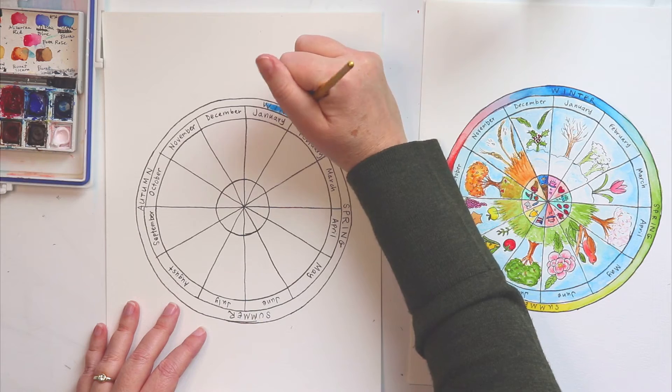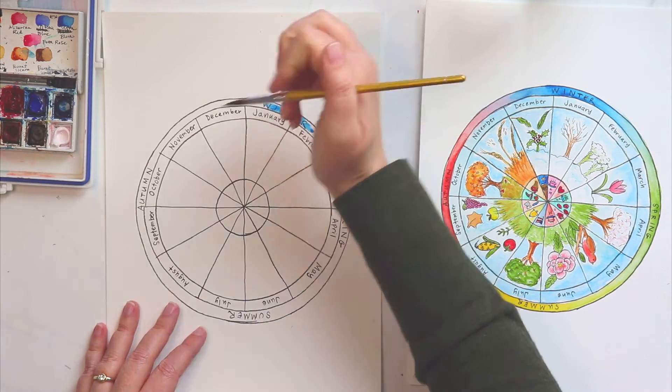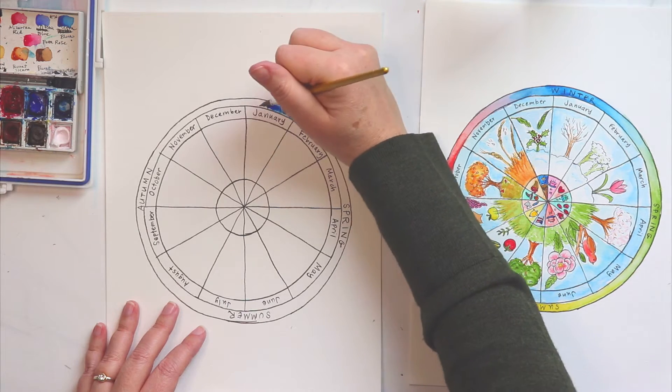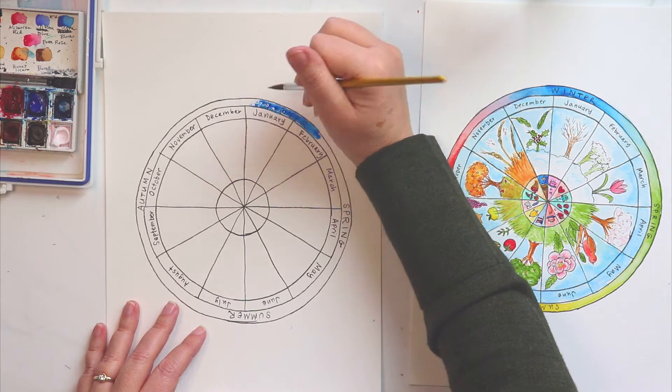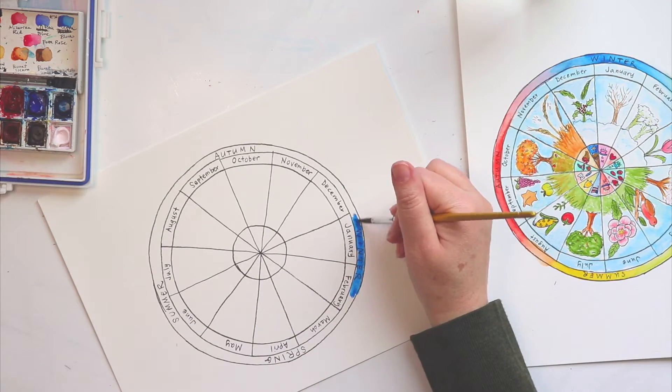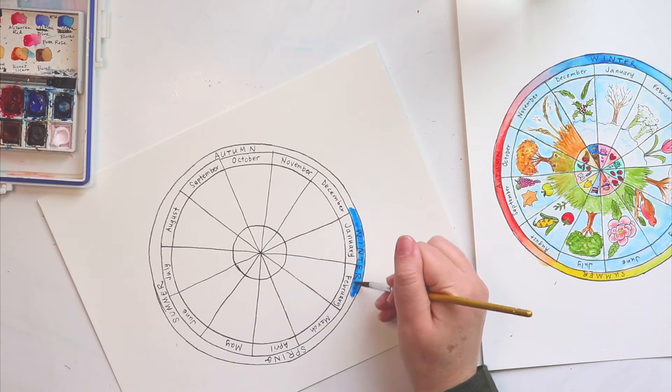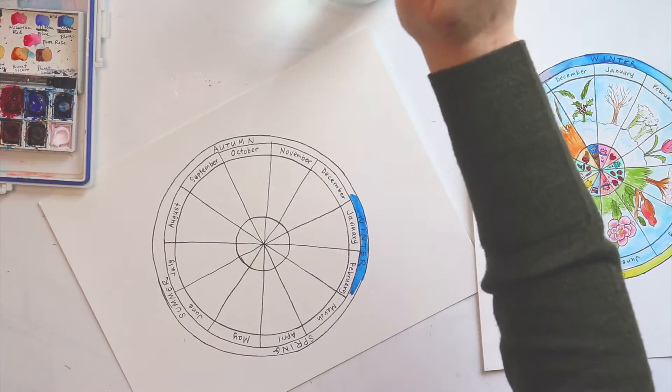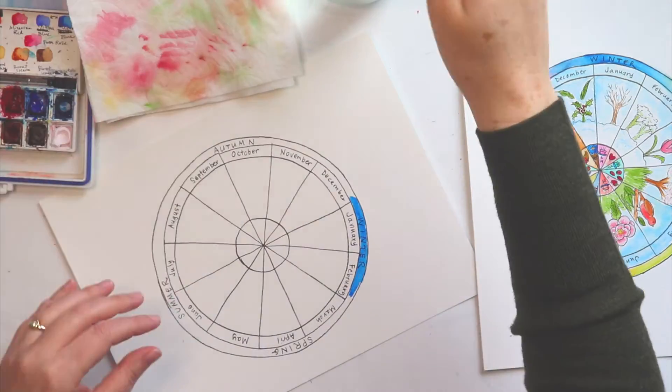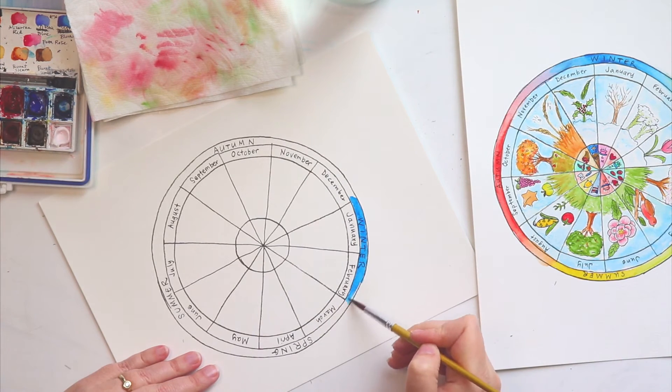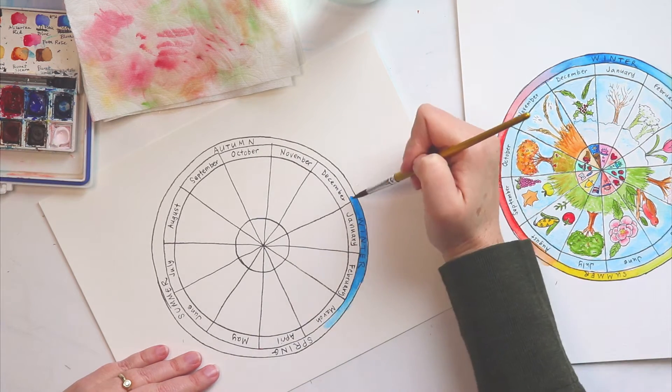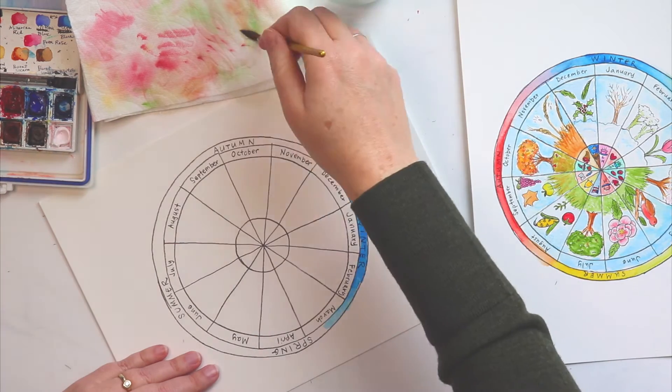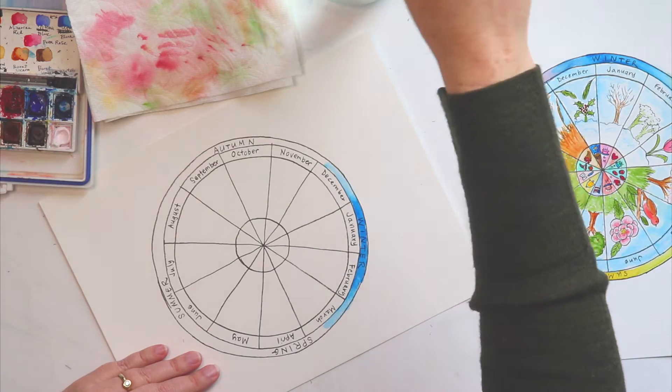I'll just start right where winter is. I'm just using, I think it says a number six brush, but you could use any round brush for this. And I'm just going to get that nice and blue. I'll wash that off and get my brush totally clean. And then I'm just going to bring that right to here and then right over to here. It's nice and light.